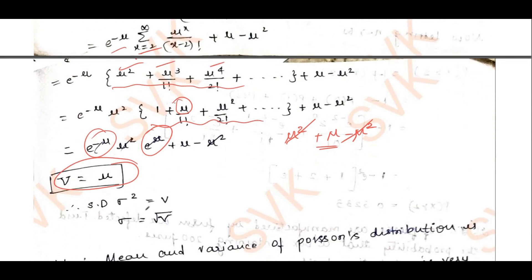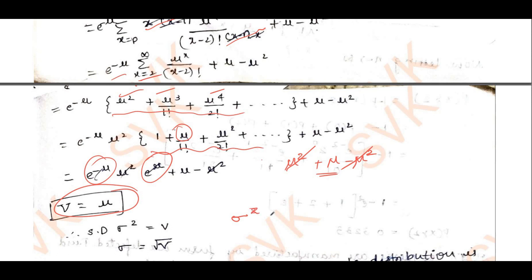Therefore, variance equals mean for Poisson's distribution — variance is always equal to mu. If asked for standard deviation, since variance equals mu, taking square root on both sides gives sigma equal to square root of mu. This is how we derive the mean and variance of Poisson's distribution. If you like this video, kindly subscribe to my YouTube channel, share with your friends, as it may be helpful for someone else. Thank you all.